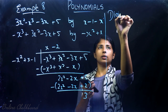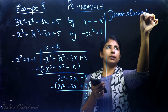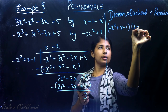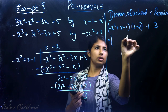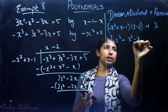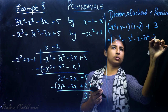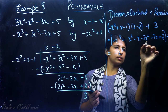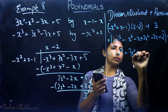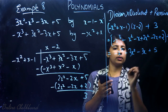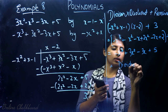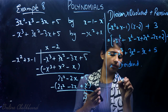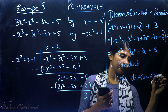Now to verify the division algorithm, we show divisor × quotient + remainder equals the dividend. Divisor (−x² + x − 1) times quotient (x − 2) plus remainder 3: expanding gives −x³ + x² − x + 2x² − 2x + 2 + 3 = −x³ + 3x² − 3x + 5, which is exactly the dividend. Hence, division algorithm verified.